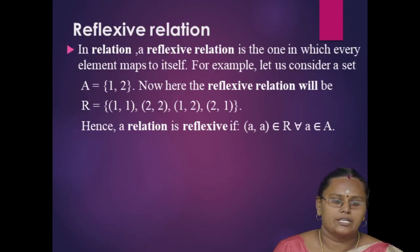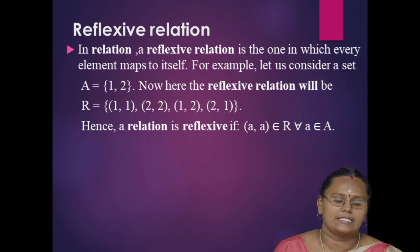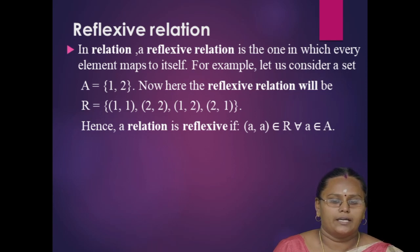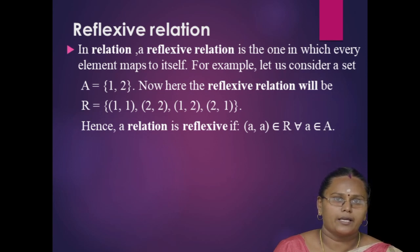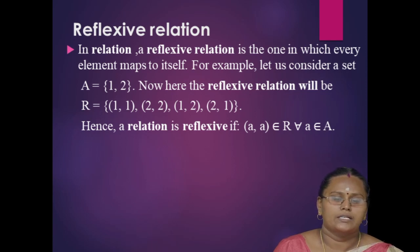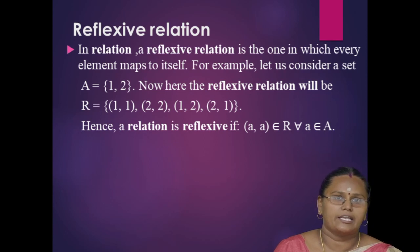Next, reflexive relation. A reflexive relation is one in which every element maps to itself. For example, let A = {1, 2}. The reflexive relation will be R = {(1,1), (2,2), (1,2), (2,1)}. The relation is reflexive since (1,1) and (2,2) are in the relation R.